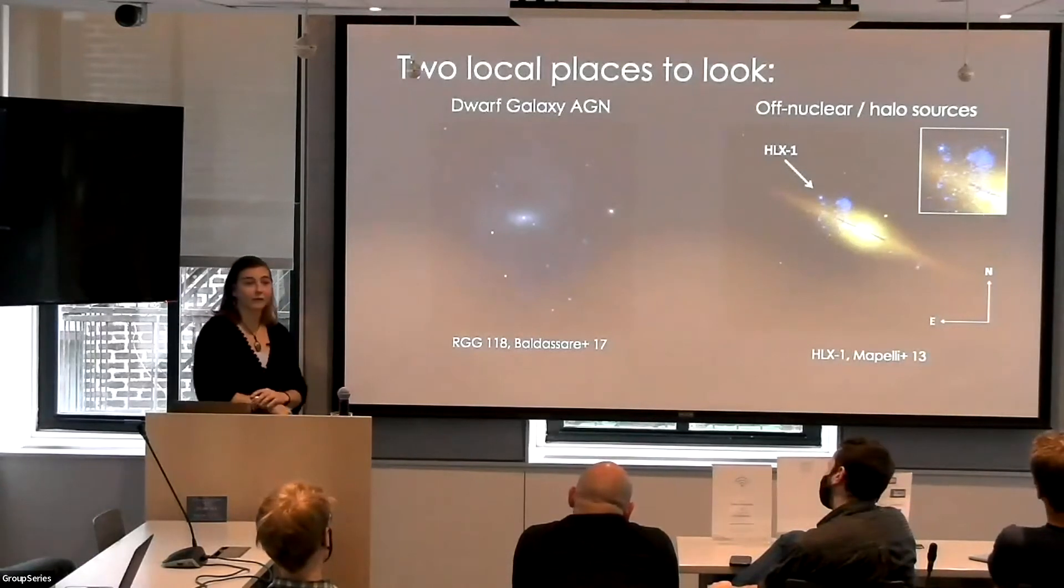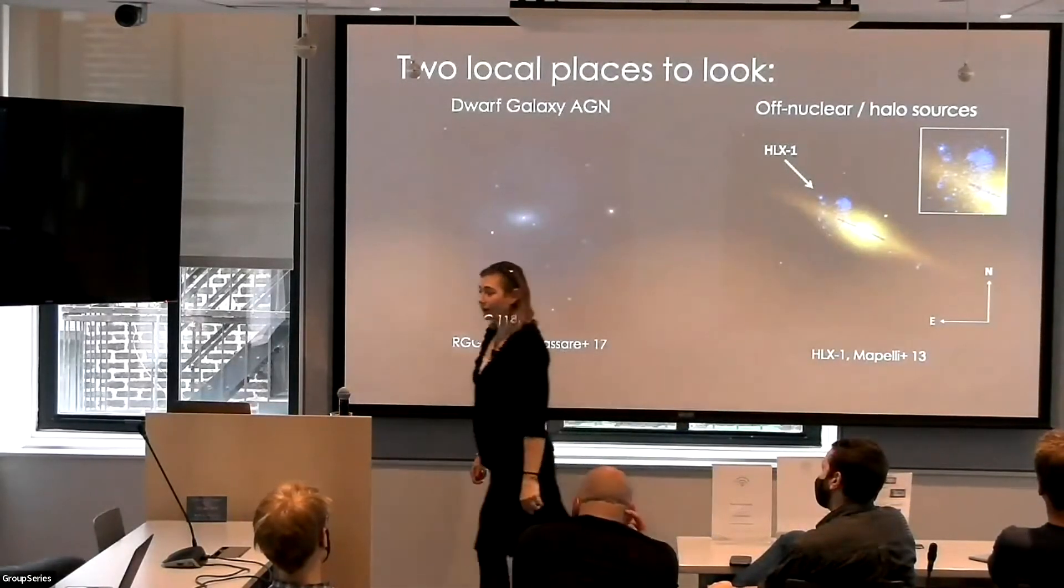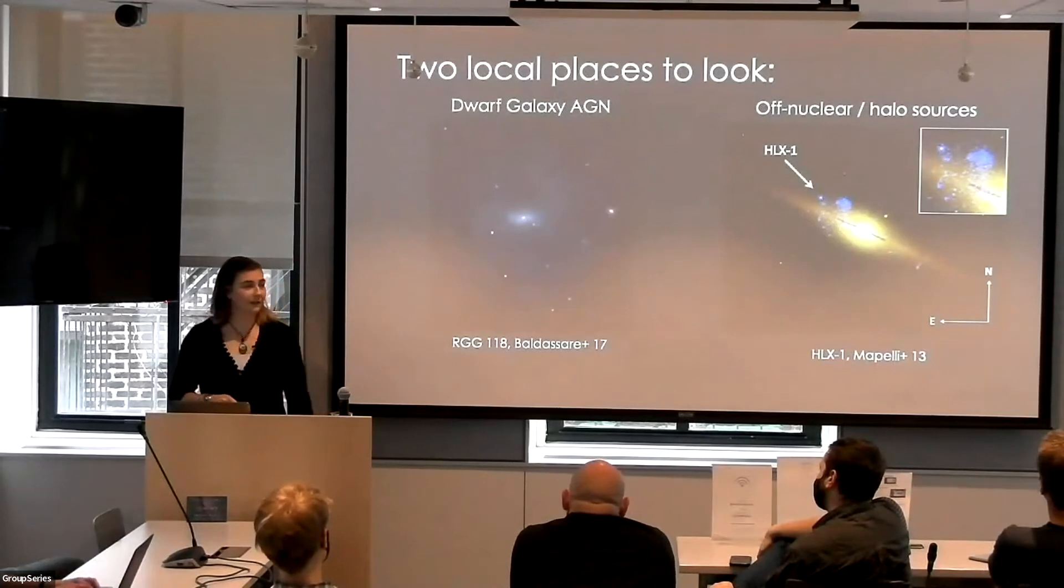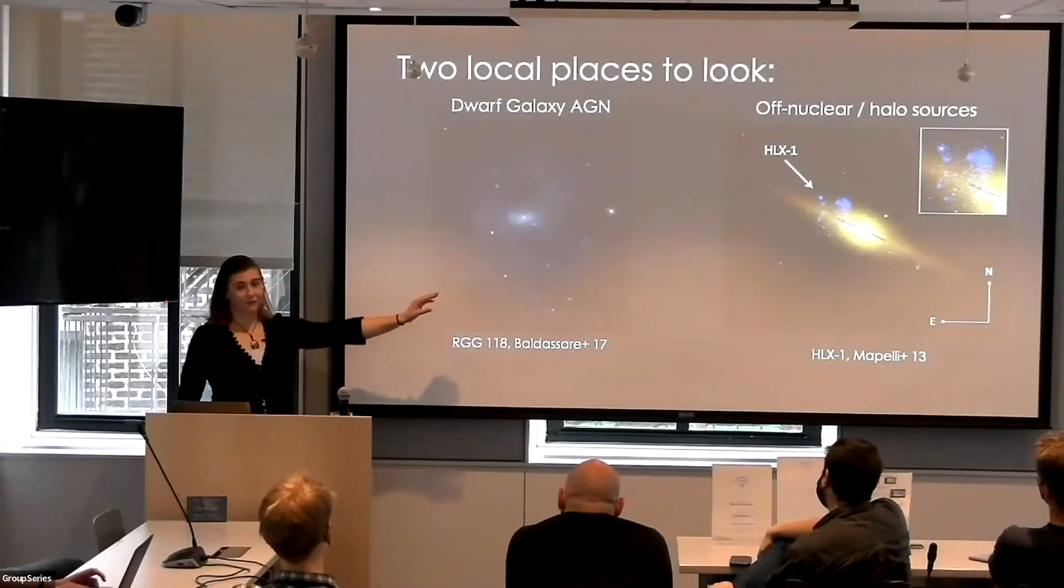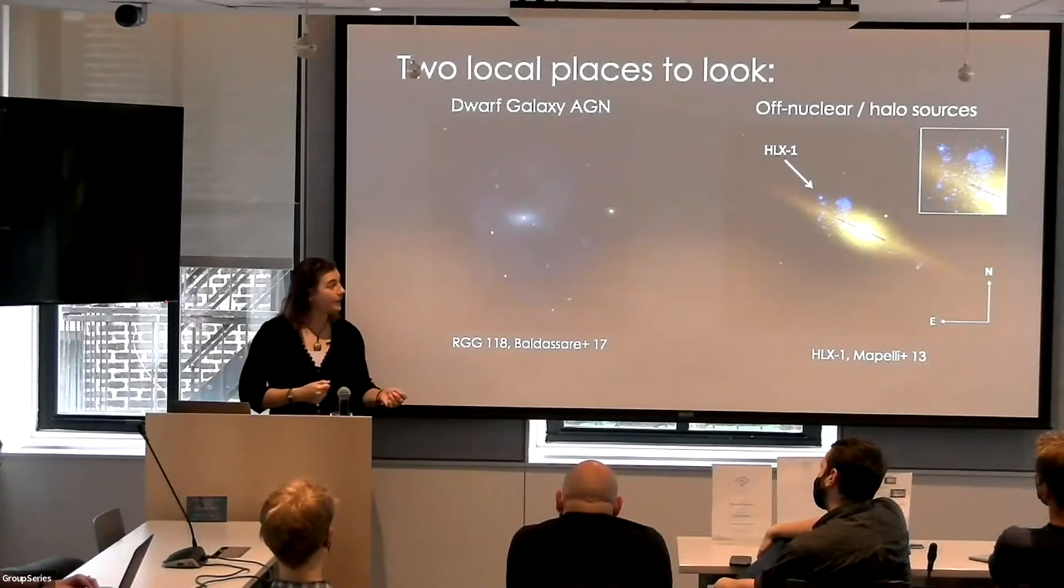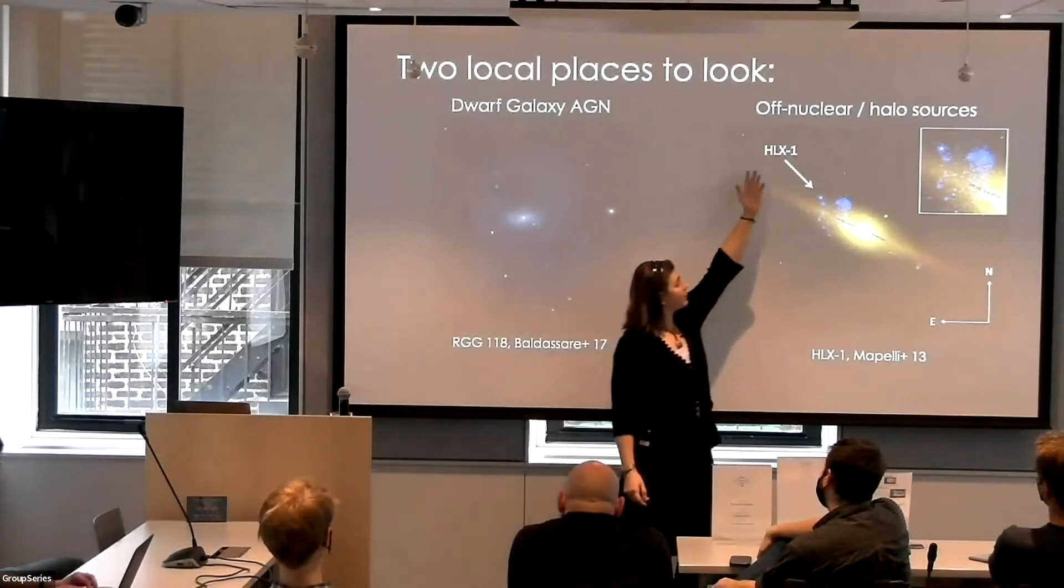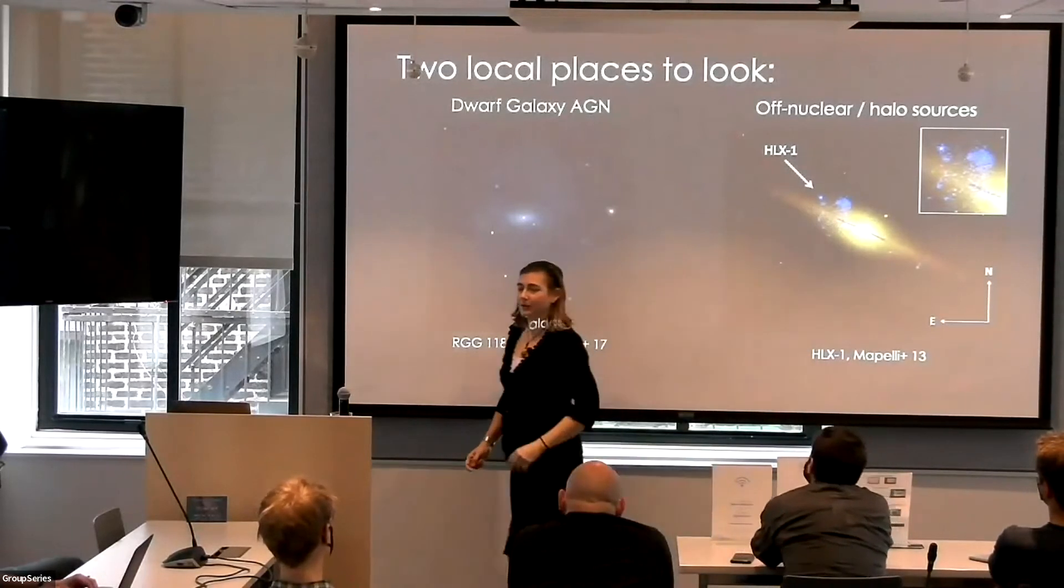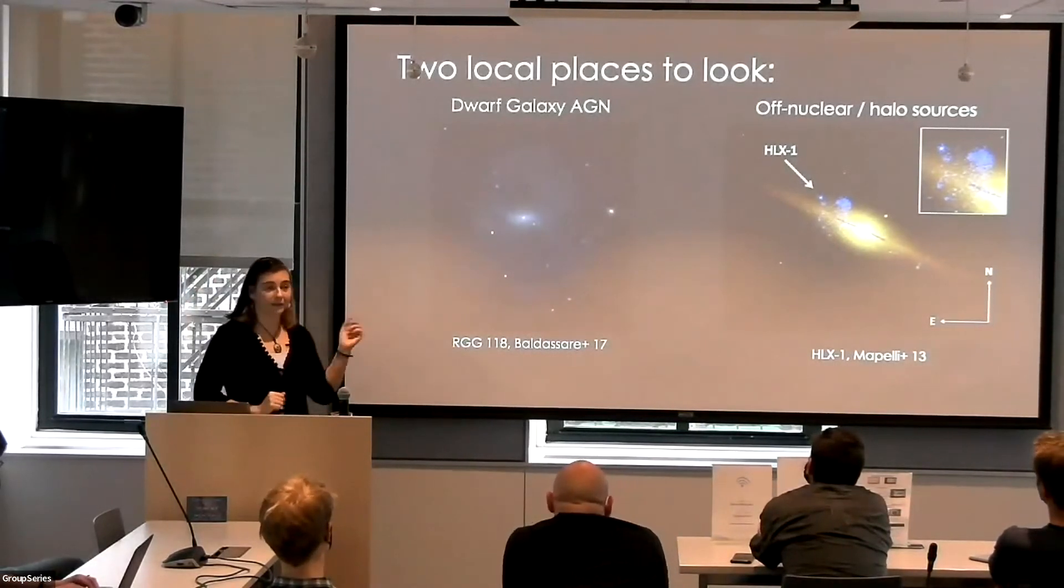But RGG118 is a very pretty dwarf spiral galaxy. It's got a nuclear star cluster and there is a 50,000 solar mass-ish black hole in the center. Masses are hard to measure, but it's definitely not a lot bigger than that and it can't be too much smaller than that. So within an order of magnitude, it's definitely in the intermediate mass range. So there's a lot of campaigns now to look for more dwarf AGN. Another place to look is off-nuclear halo sources.